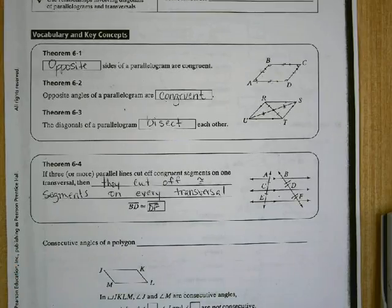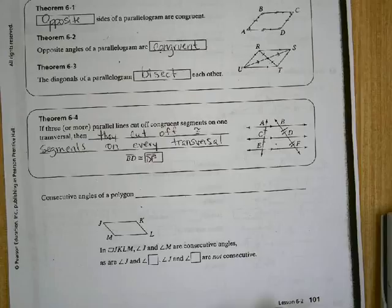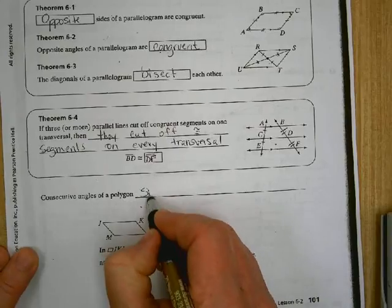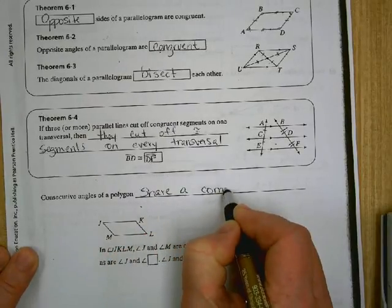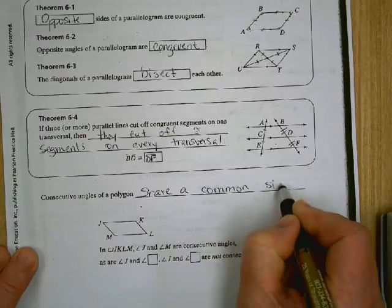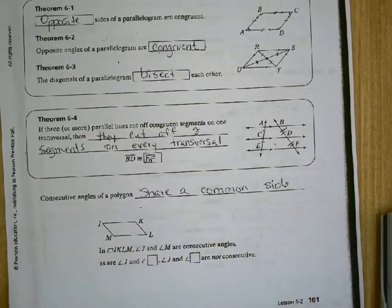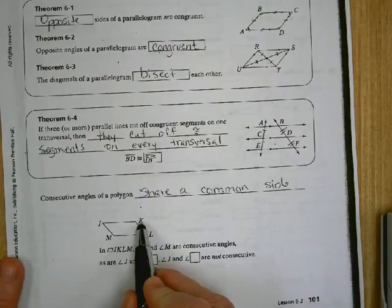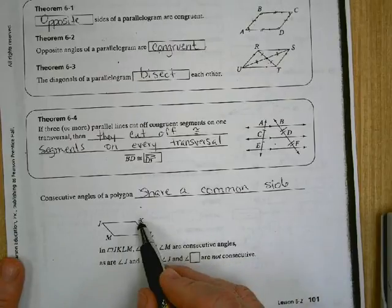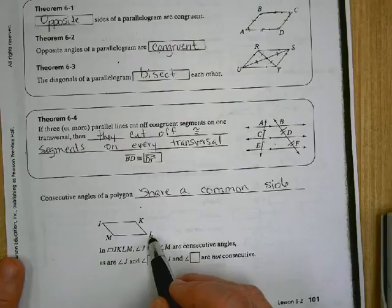Consecutive angles of a polygon share a common side. Consecutive means right next to each other. J and K are consecutive angles. They share side JK. Angle K and angle L are consecutive. They share side KL.